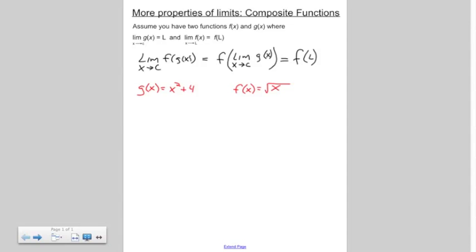To create a composite function, we put g of x inside f of x. So f of g of x equals the square root of x squared plus 4.